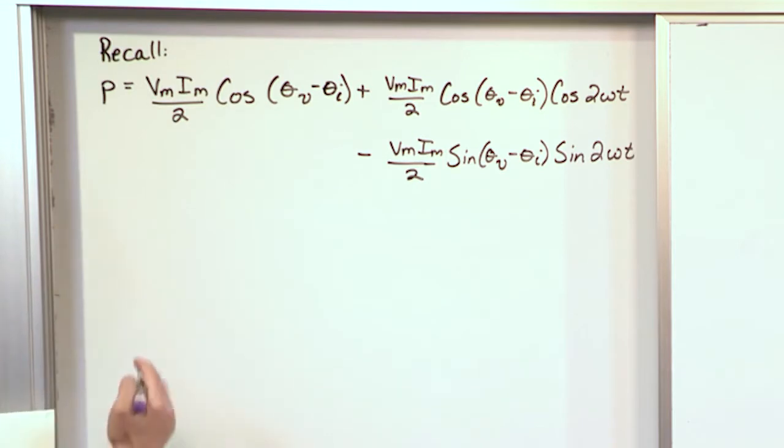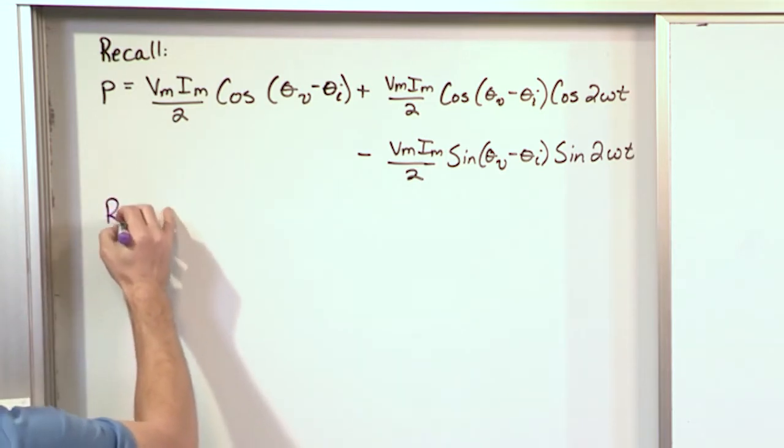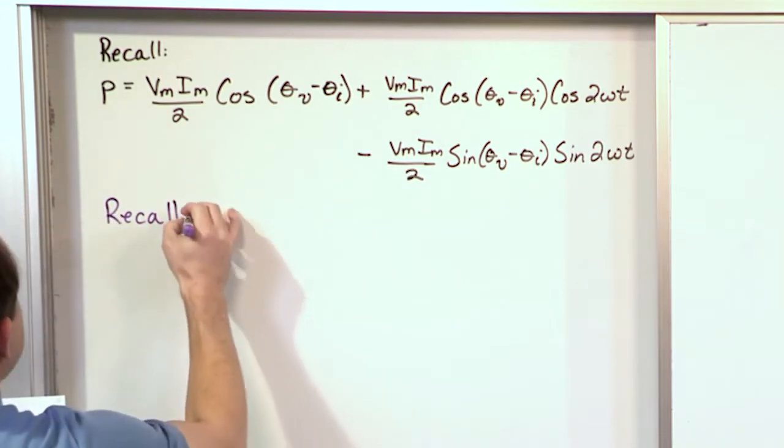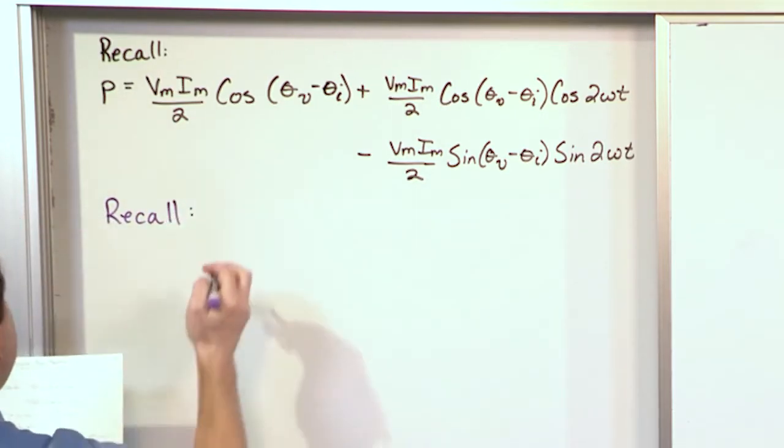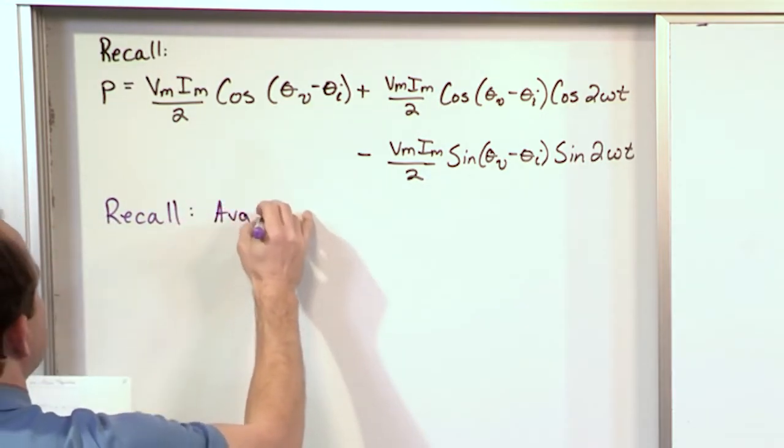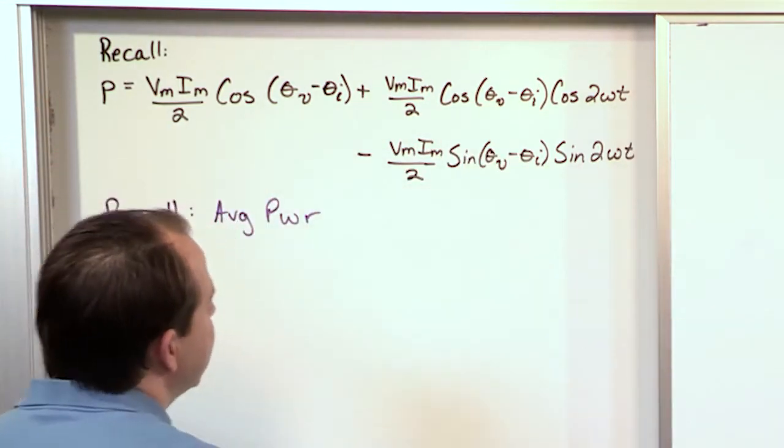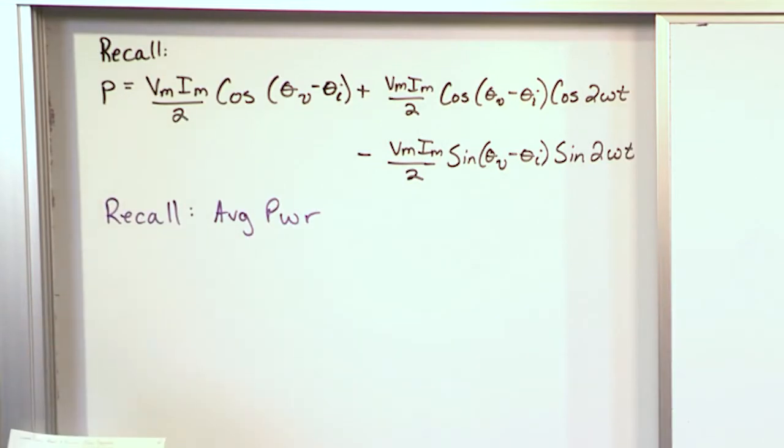Let's go back and recall a couple of quick things, all directly related to this giant equation on the board. Recall that average power is when we take this instantaneous power, integrate it over a period, and then divide it by the period. We're taking an average.